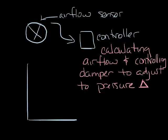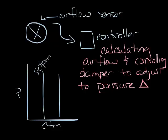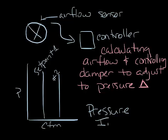Let's graph the airflow in a pressure independent system. It would look something like this, where the CFM stays the same as the pressure changes. The CFM would basically change only when you went from one set point condition to another set point condition.